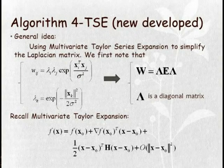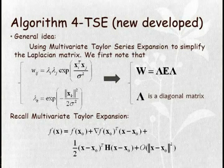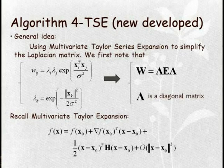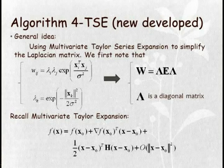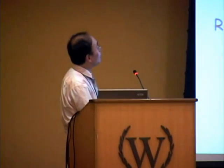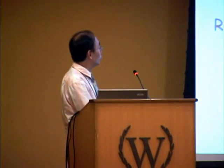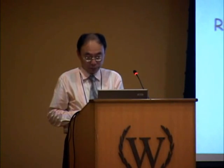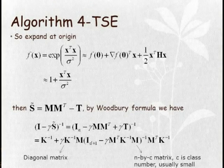This is Algorithm 4, the new algorithm developed by us. The general idea of our algorithm is to use the multivariate Taylor series expression to simplify the Laplacian matrix. We transfer the Laplacian using the multivariate Taylor series expression, and here is the formulation of the multivariate Taylor expressions and the algorithmic details of our approach.